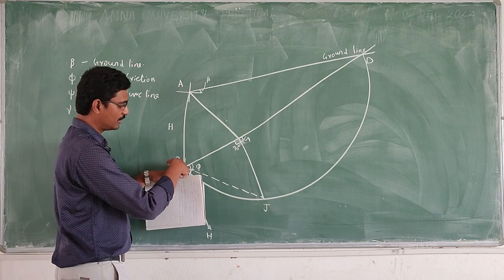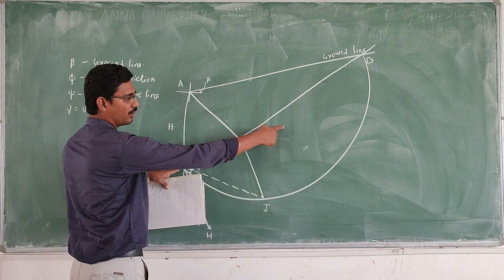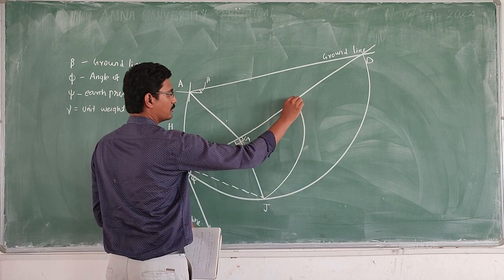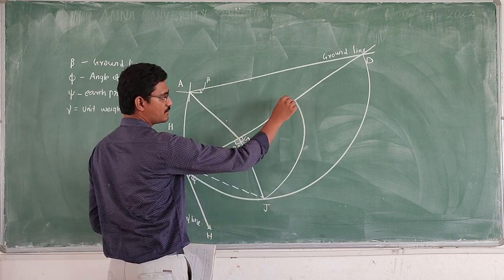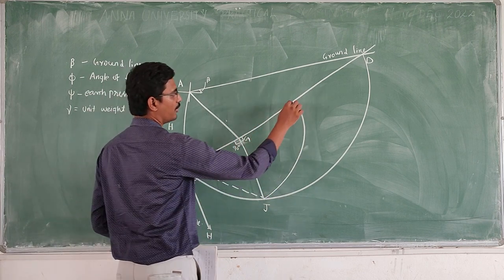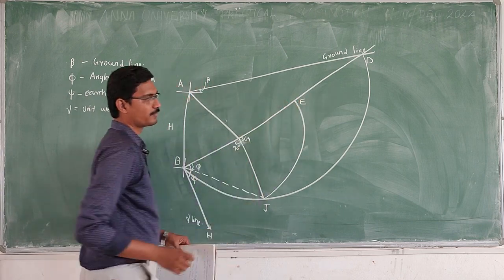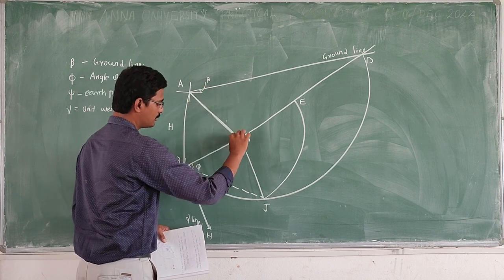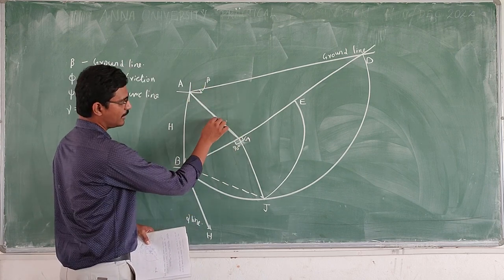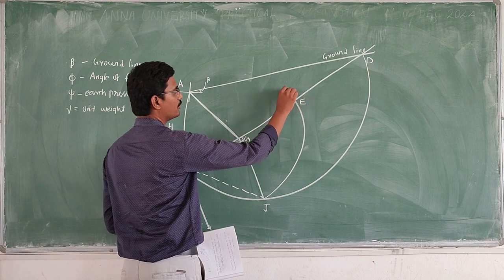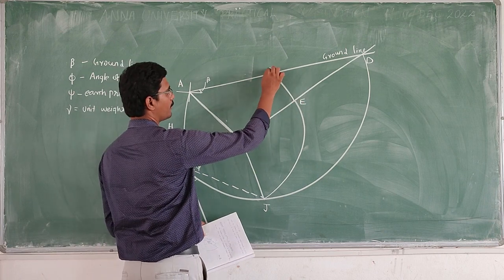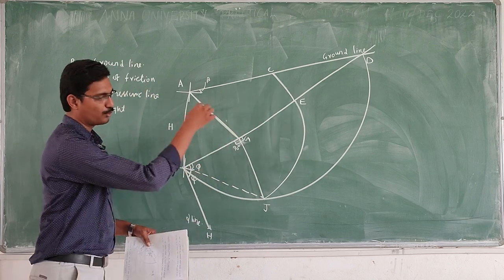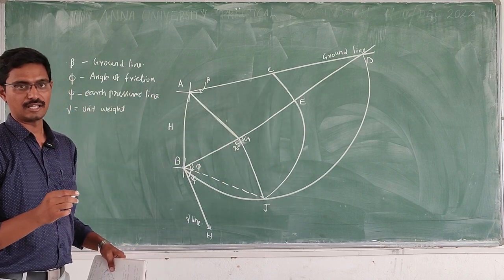We take BJ as the radius and draw an arc that cuts BD. The point where the arc cuts BD will be E. After that, we draw lines parallel to the psi line — specifically AJ and E to C. These three are parallel lines.